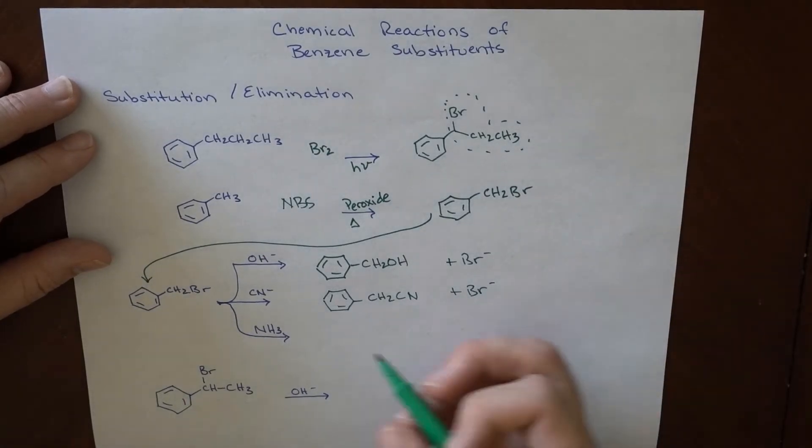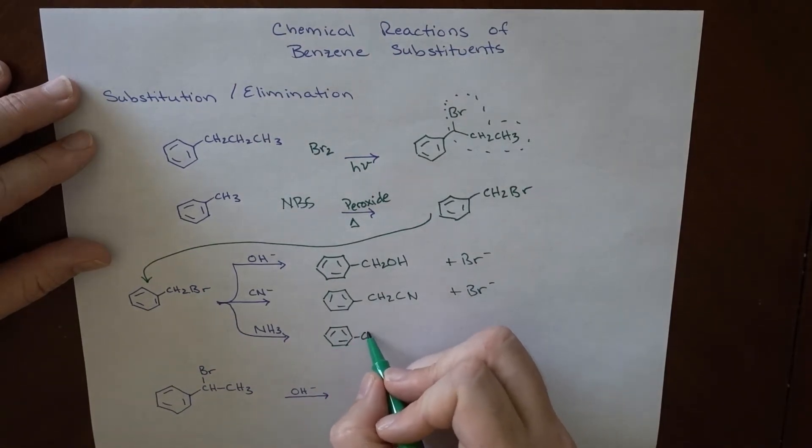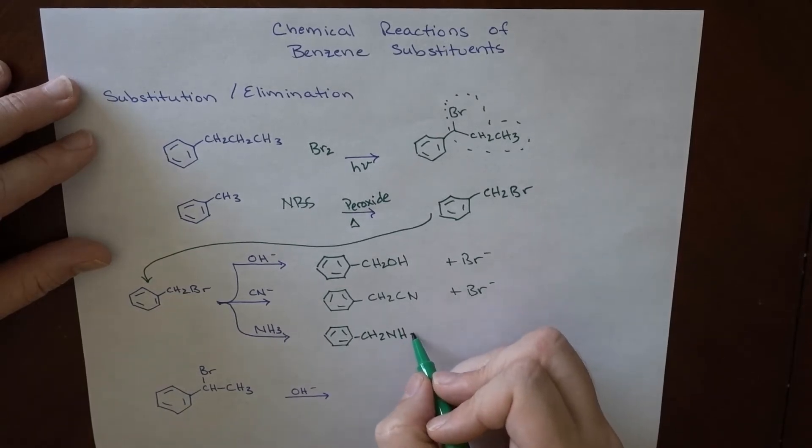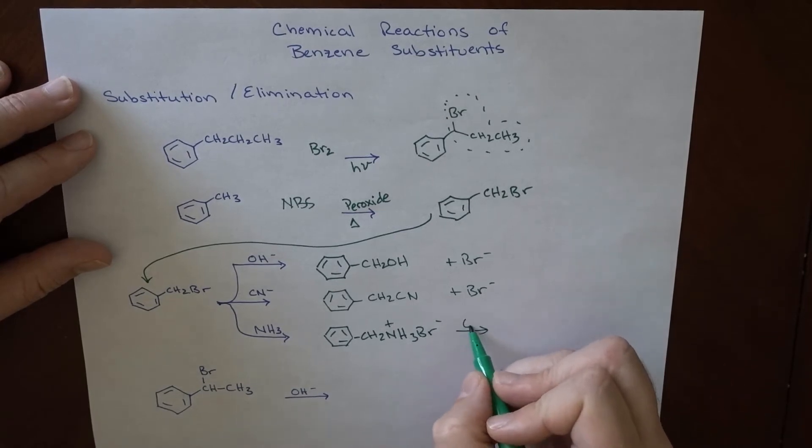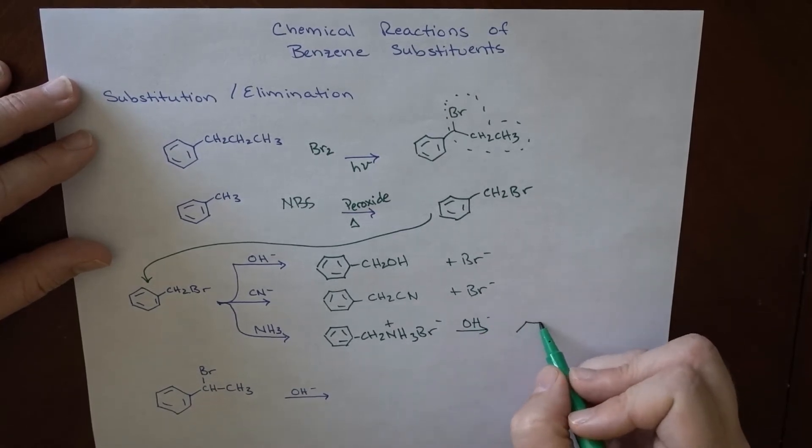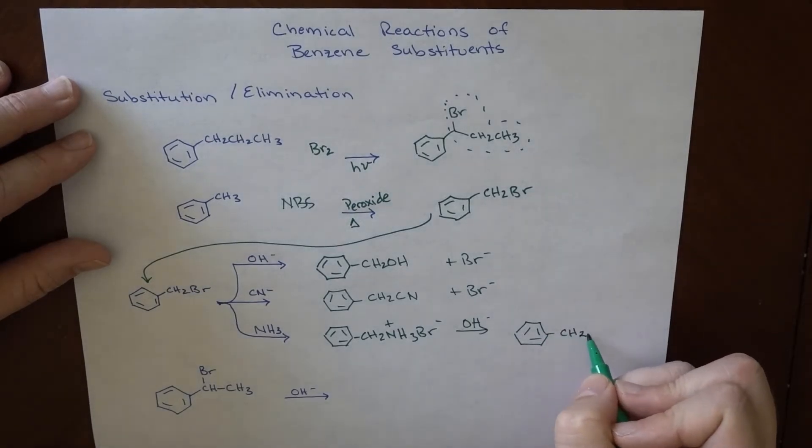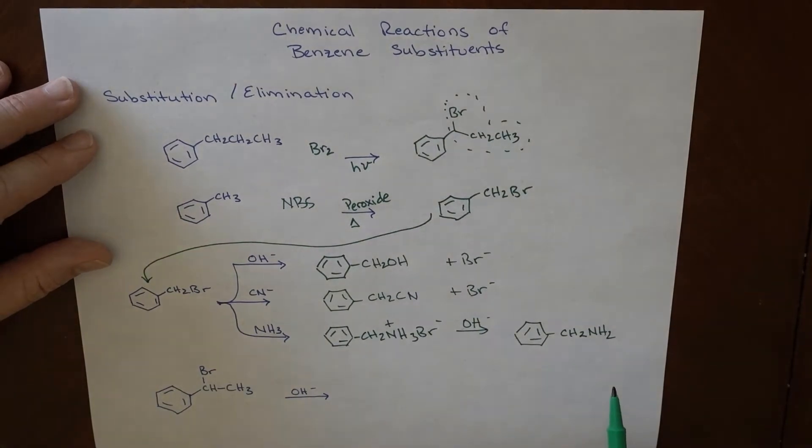And then we can also, if we want, we can add an NH3 group to it. So here we have this, now it adds, it's more like a cation, and then we treat it with a little bit of base, so that we can get CH2NH2. So we get a primary amine there where we used to have one.